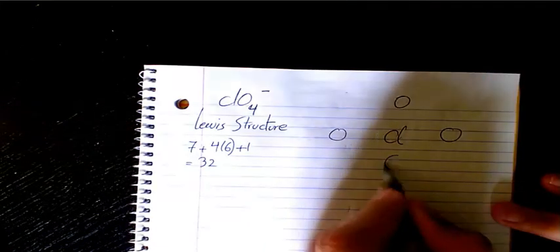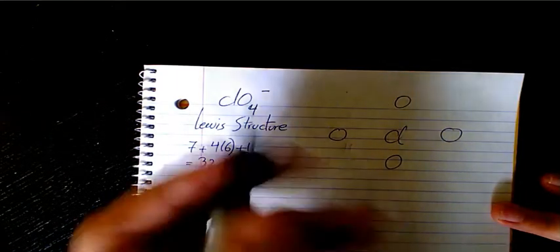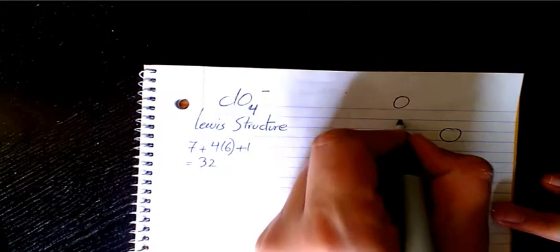And then we have chlorine in the middle, oxygens around it. So we have seven electrons for chlorine.